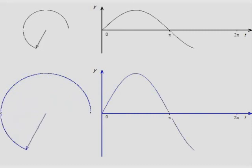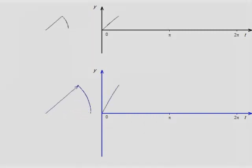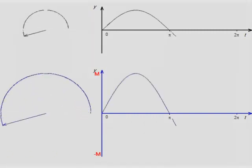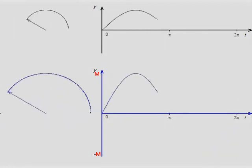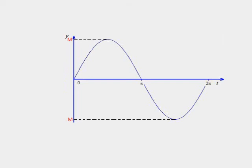However, our new sine wave has been stretched vertically. This time, the minimum value is minus M while the maximum value is M. This number M is called the amplitude or peak value of the sine wave.